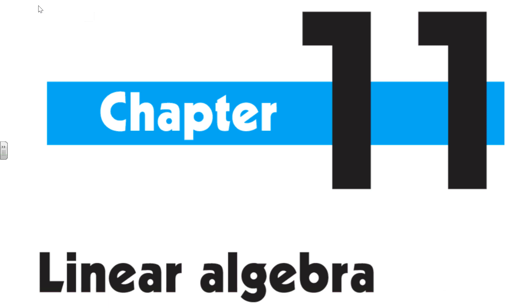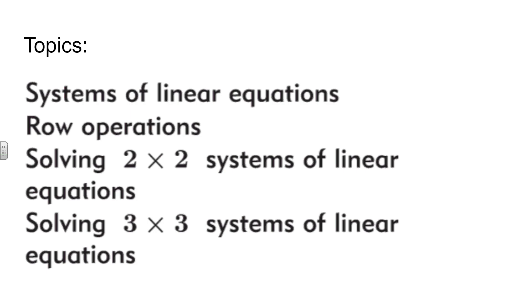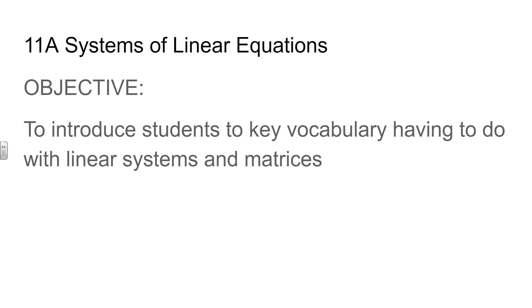How we doing guys, this is Mr. Patterson checking in with IB Math AA HL Chapter 11. This chapter is called Linear Algebra and we're really just scratching the surface as to what linear algebra is. We're going to go through a couple of topics here. Those topics are systems of linear equations, row operations, and then solving 2x2 and 3x3 systems of linear equations. There are entire courses in college that cover linear algebra, so we're just barely scratching the surface.